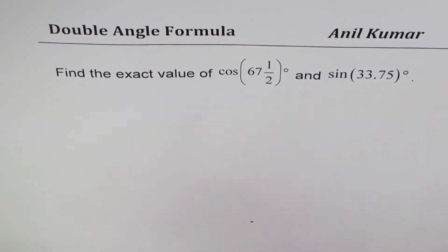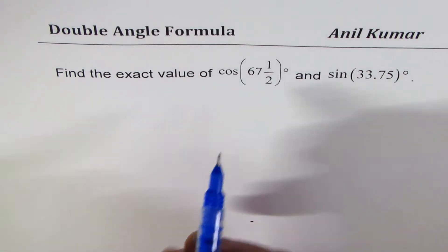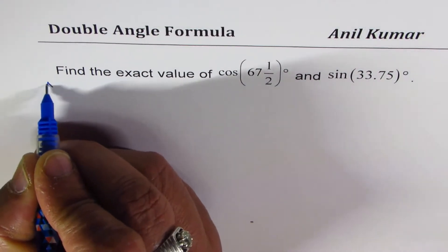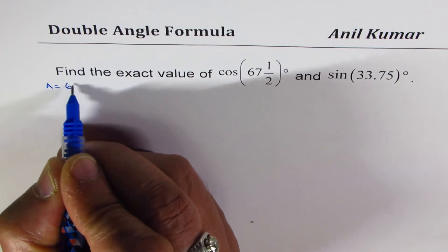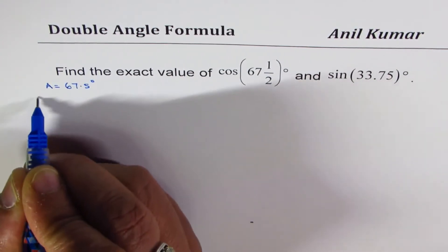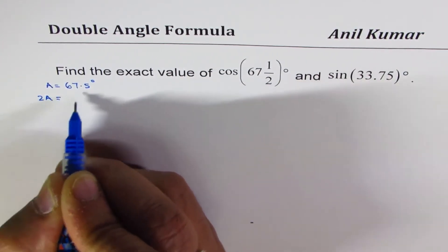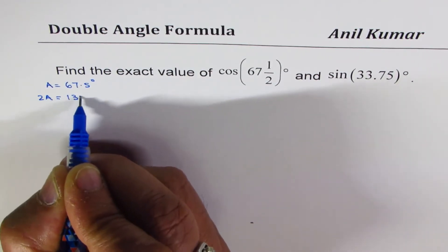Now let us try to understand our strategy first. Let us say angle A given to us is 67.5 degrees. So what is 2A? Twice this is 135 degrees.